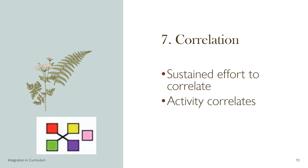Step 7: Correlation. There is a sustained and regular attempt in the curriculum to correlate the relevance of each subject to each other. For example, an activity like a seminar is conducted every week to integrate the learning done in the separate subjects or disciplines. The conduct of PBL at the end of some subject courses can show how the various disciplines come together to solve patient problems.